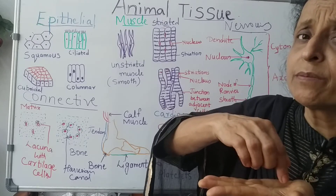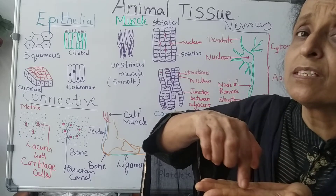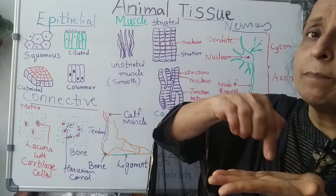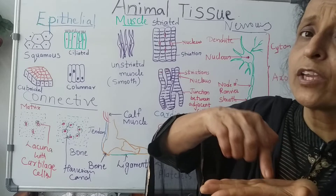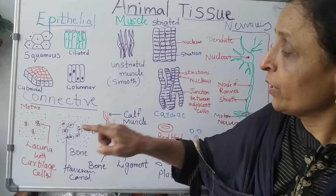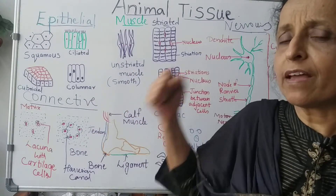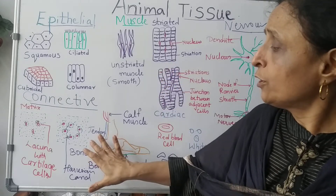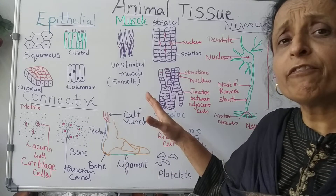In bone, the matrix is arranged in concentric circles. In the center there is a space, and in between there are lacunae — this is the Haversian canal which connects the cells. The matrix is hardened with calcium and phosphorus, which is why bone is strong and rigid.